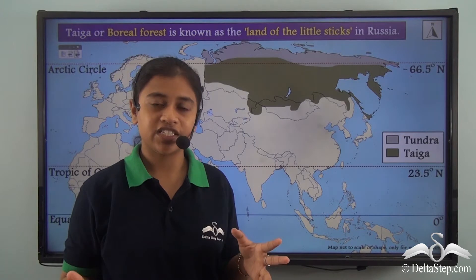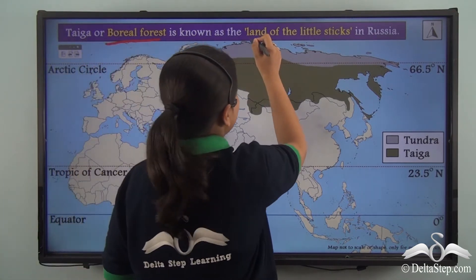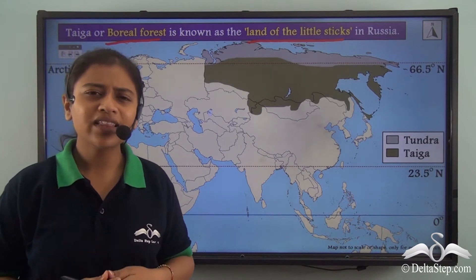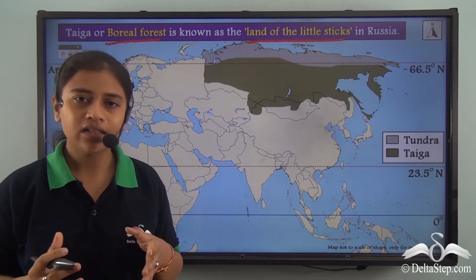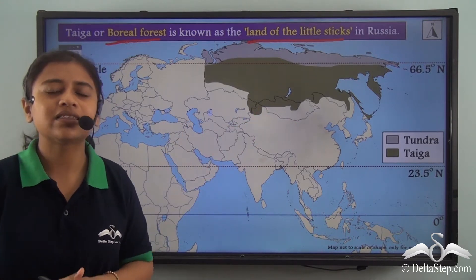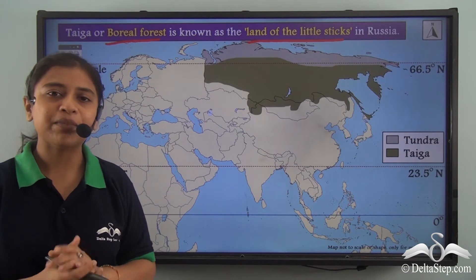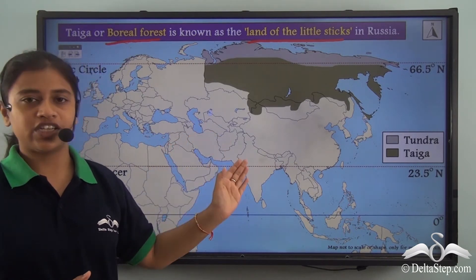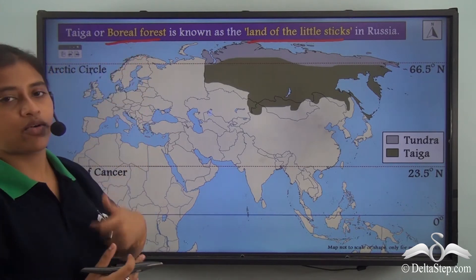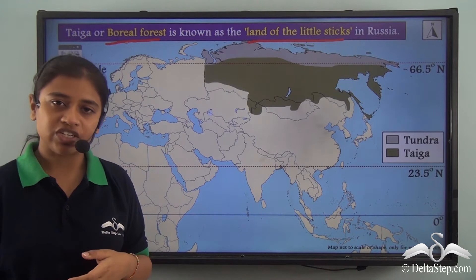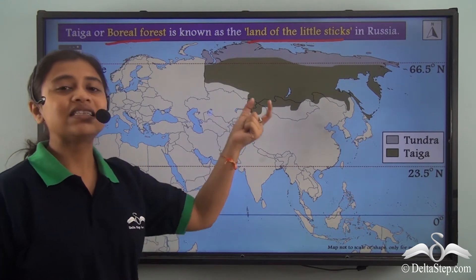Taiga forest, or taiga vegetation, is also known as the boreal forest and is often referred to as the 'land of little sticks' in Russia. This is mainly because the vegetation here is stunted and skinny. The taiga forest is located in the Siberian region, just to the south of the tundra vegetation and tundra type of climate regions. The word 'boreal forest' is also derived from the Russian language and is mostly associated with the Siberian plain.